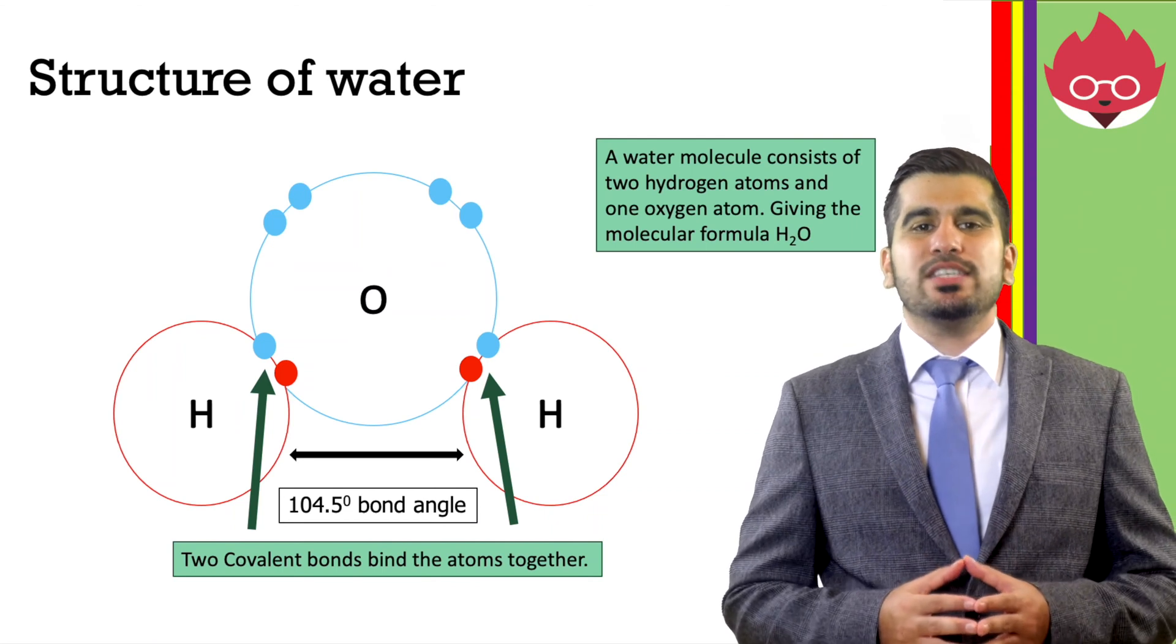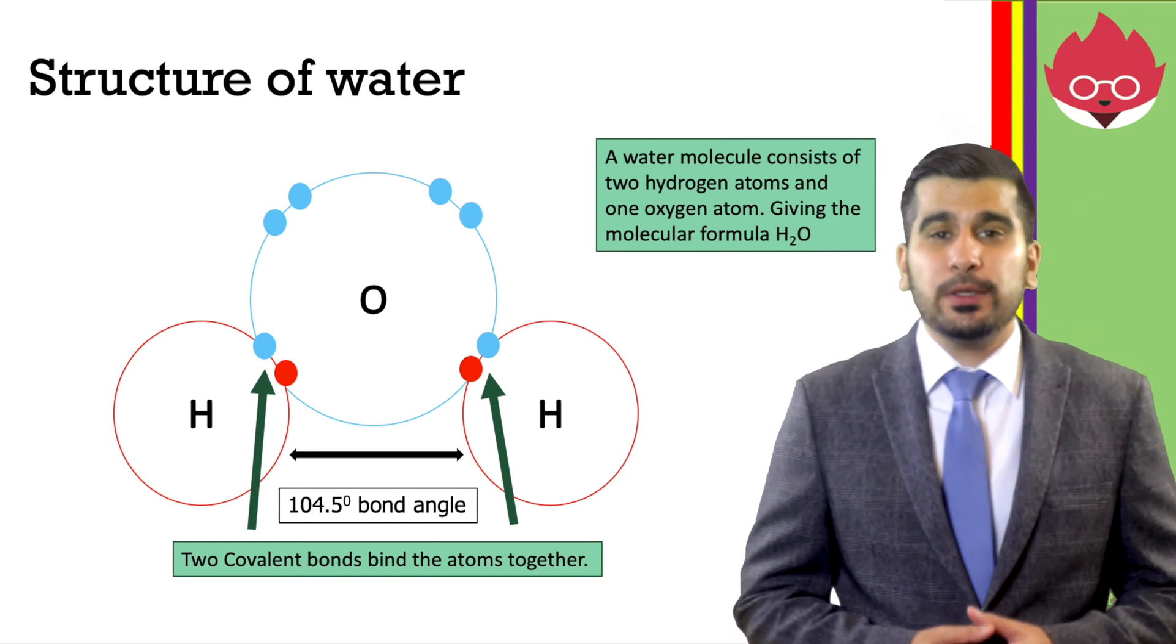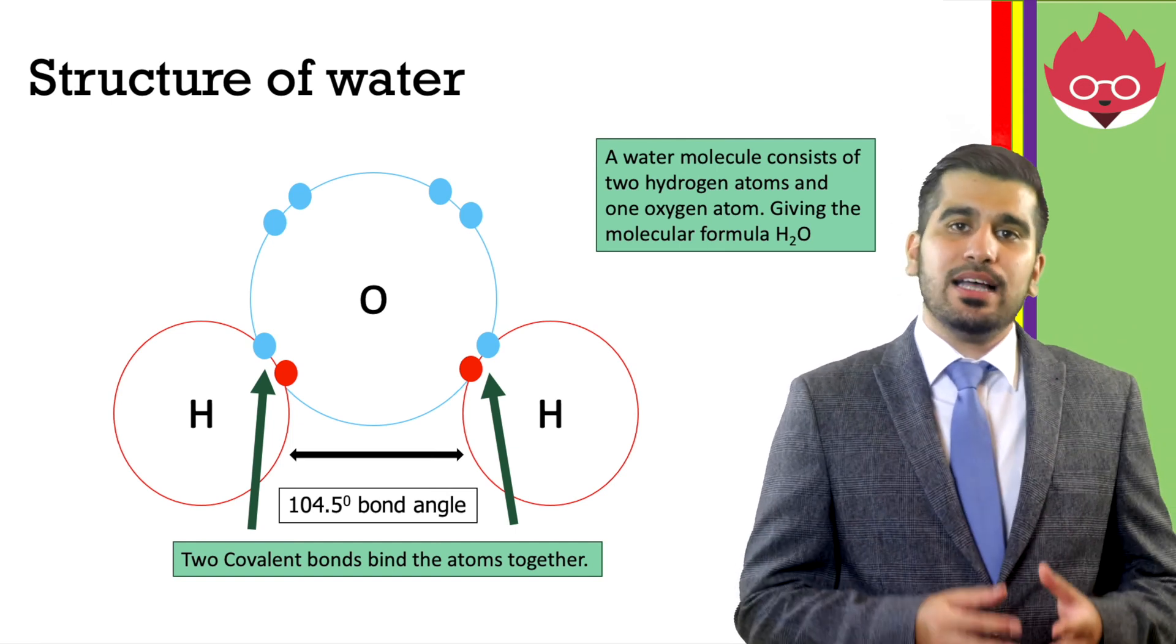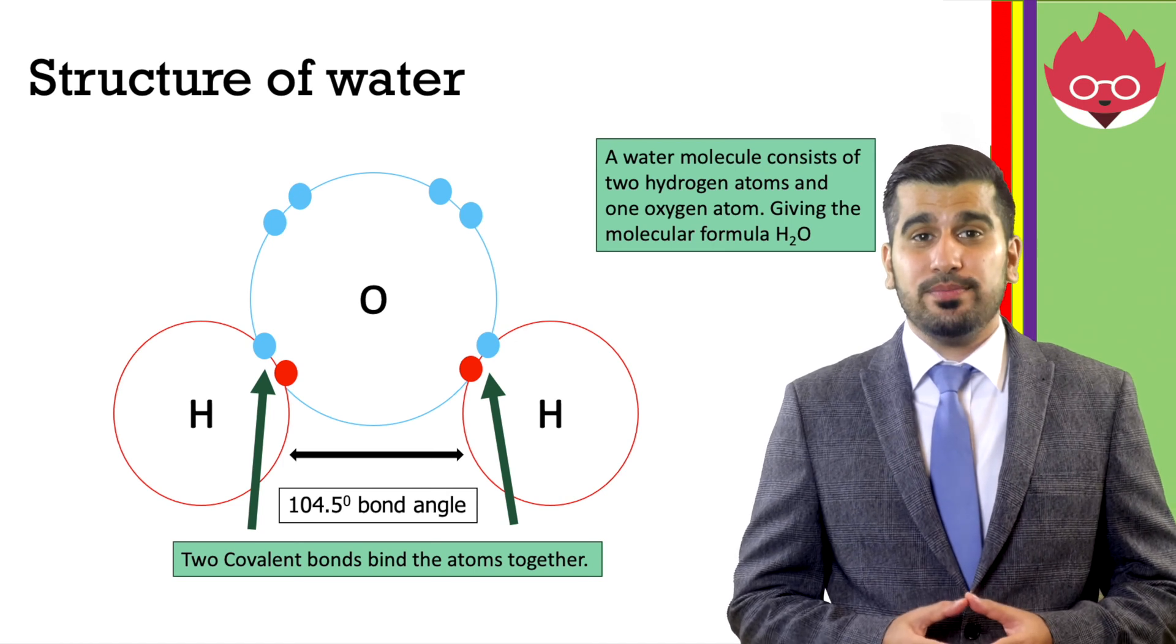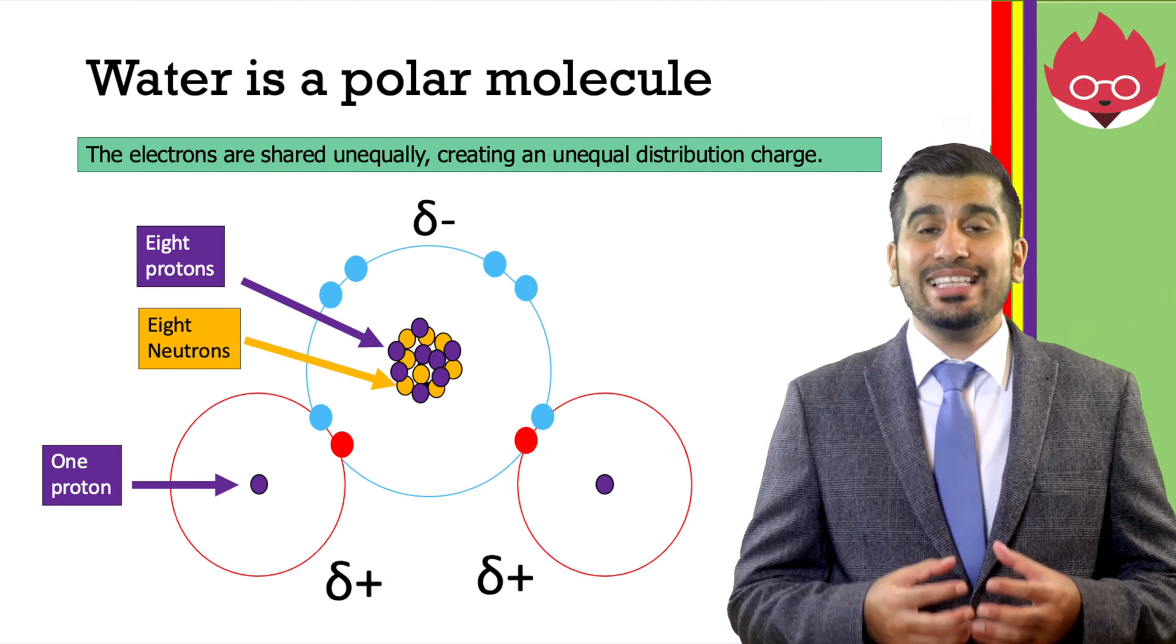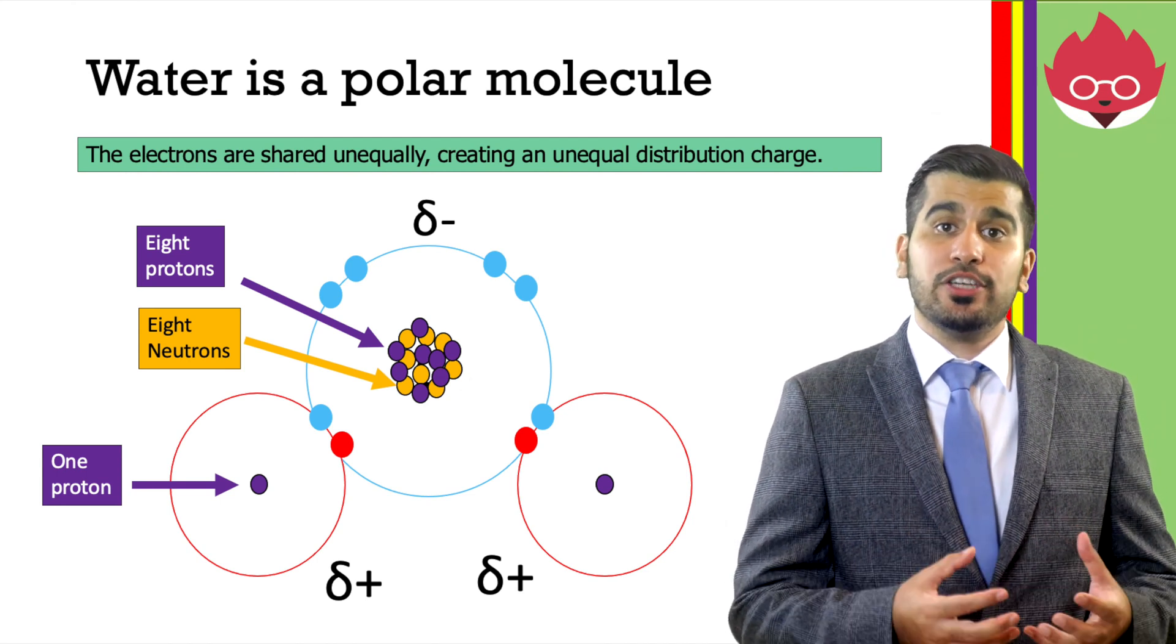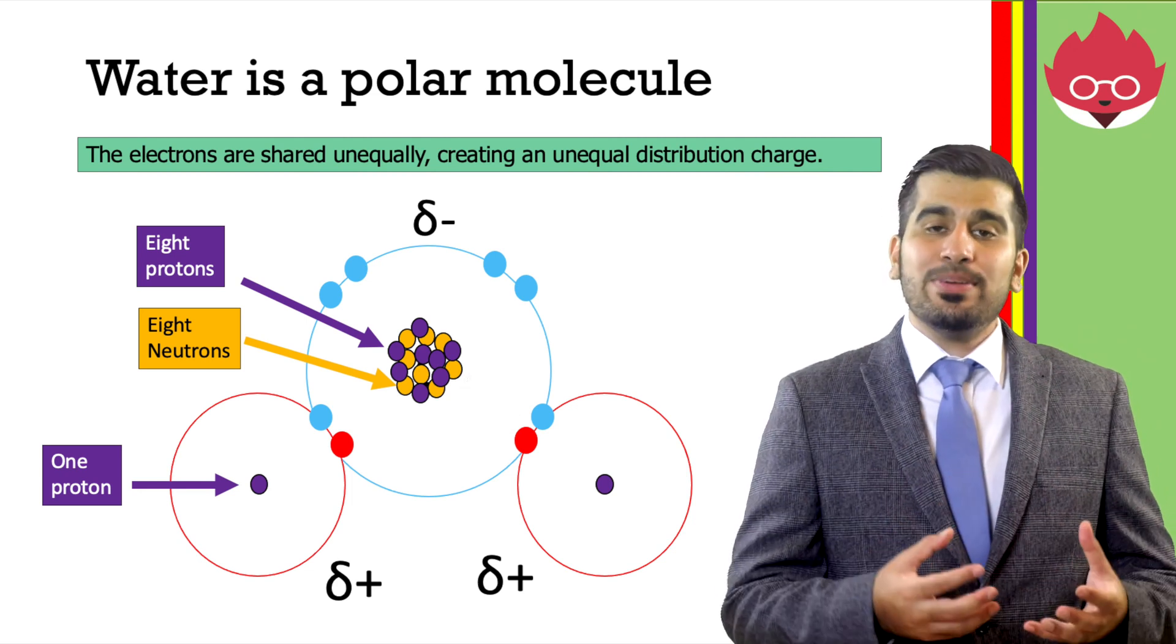In order to understand why water is so important to life, we first need to look at its structure. A water molecule consists of one oxygen and two hydrogen atoms, giving the molecular formula H2O. The bonds that hold the oxygen and the hydrogen are examples of covalent bonds. Although the electrons in the molecule are shared, they are shared unequally, creating an unequal distribution of charge. The oxygen atom has more protons in its nucleus, so it attracts the shared electrons in the covalent bond more strongly than the hydrogen atom does.